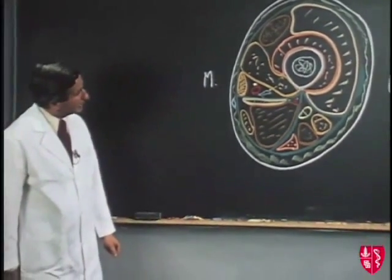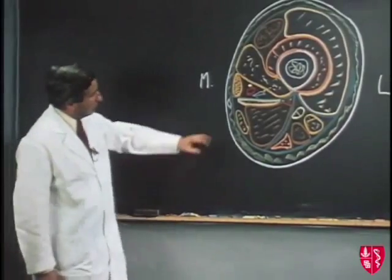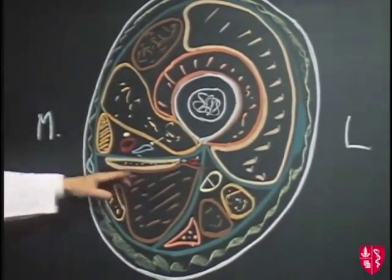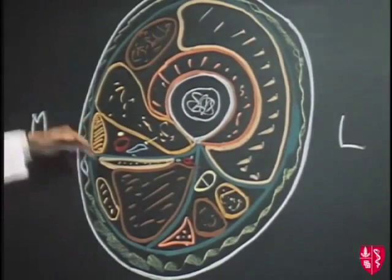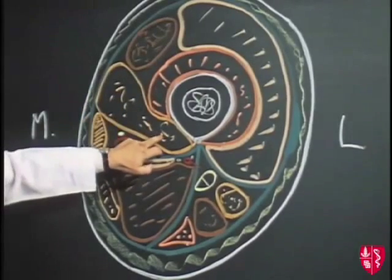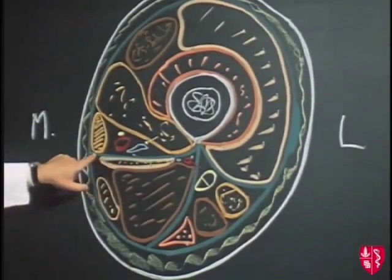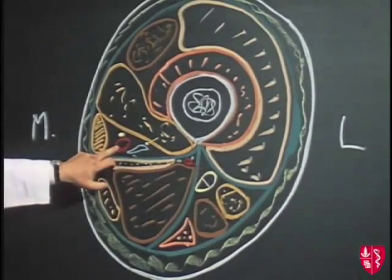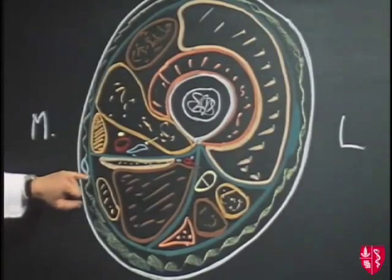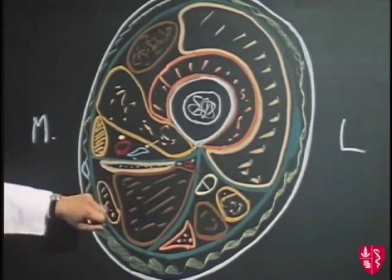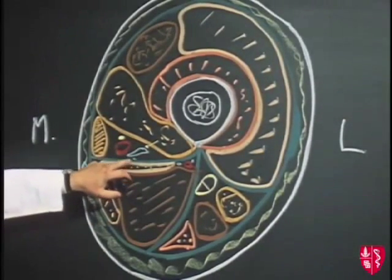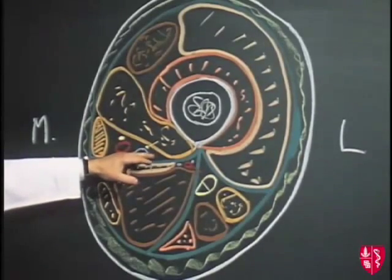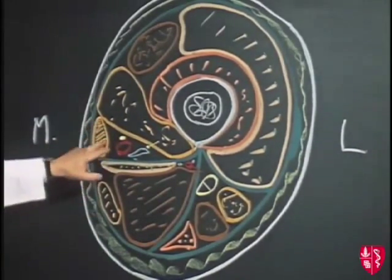Dr. Snell, what are the boundaries of the subsartorial canal? The subsartorial canal lies on the medial side of the thigh — this little triangular area bounded medially by the sartorius, anterolaterally by the vastus medialis, and behind by the adductor longus covered by this fascial septum. In this canal we have the terminal part of the femoral artery going on down through the hiatus in the adductor magnus into the popliteal space. It also contains the saphenous nerve, the nerve to the vastus medialis, and usually a branch of the obturator nerve, as well as the femoral vein. This area occupies about the middle third of the thigh, lying underneath the sartorius muscle.